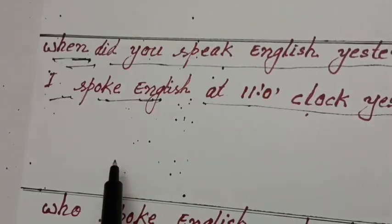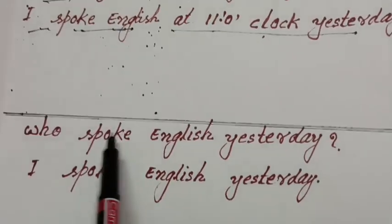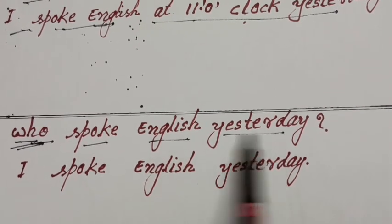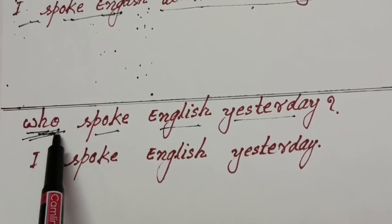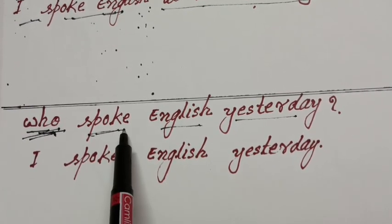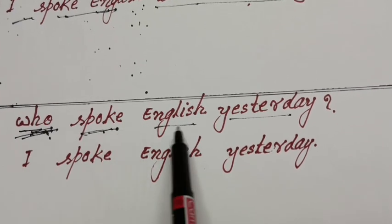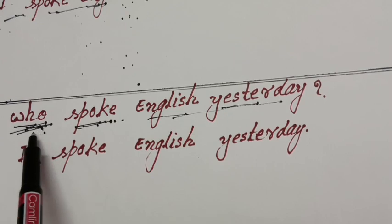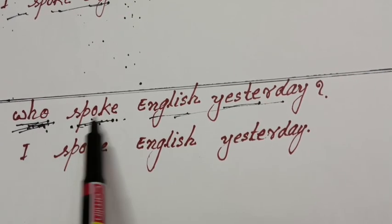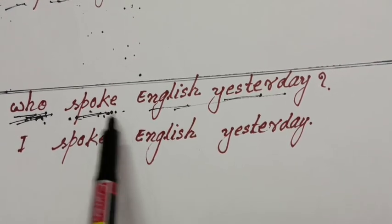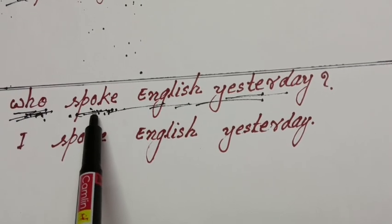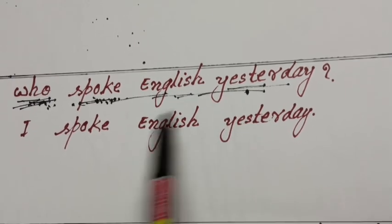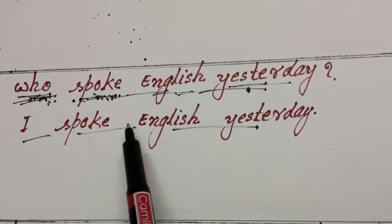Now take the WH question 'who'. Who spoke English yesterday? Friends, here what should you do — with 'who' questions in past simple tense, you use the second form directly. Who spoke English yesterday? I spoke English yesterday.